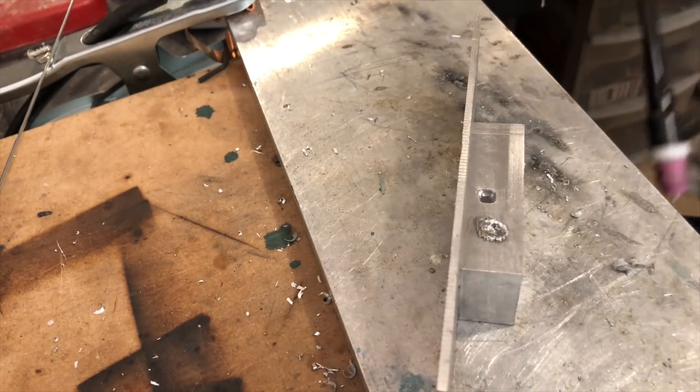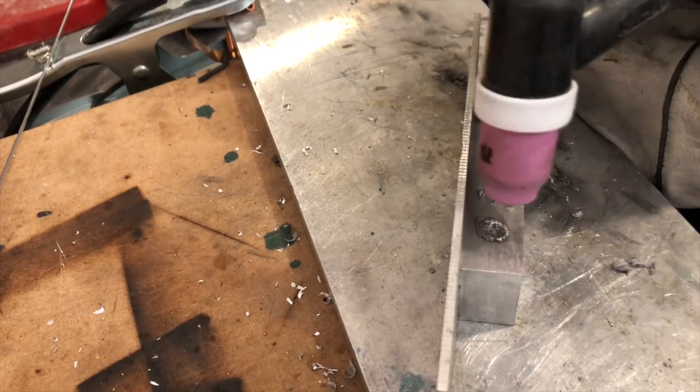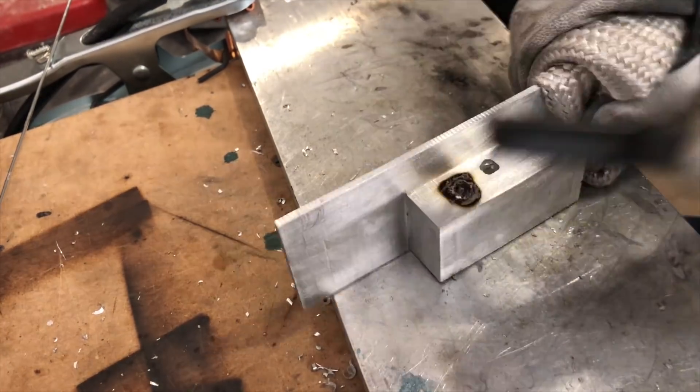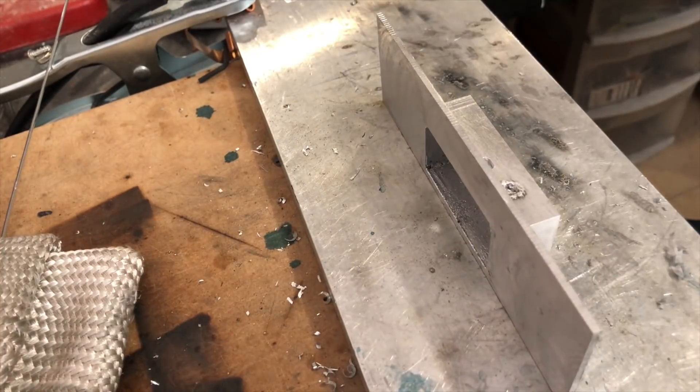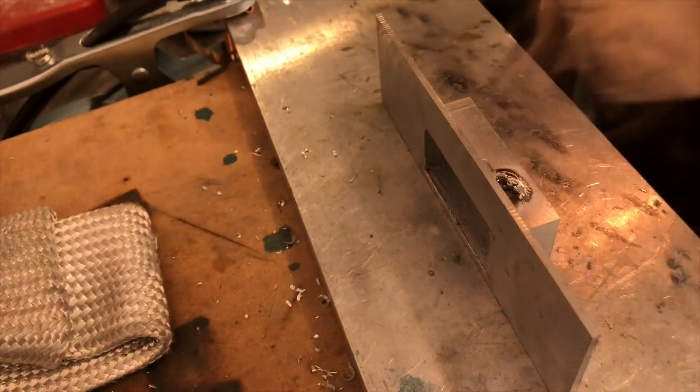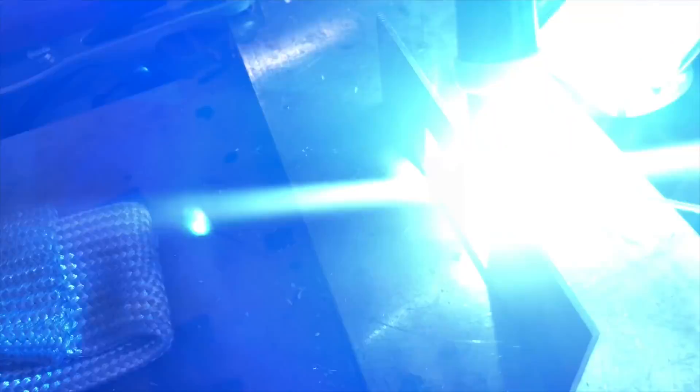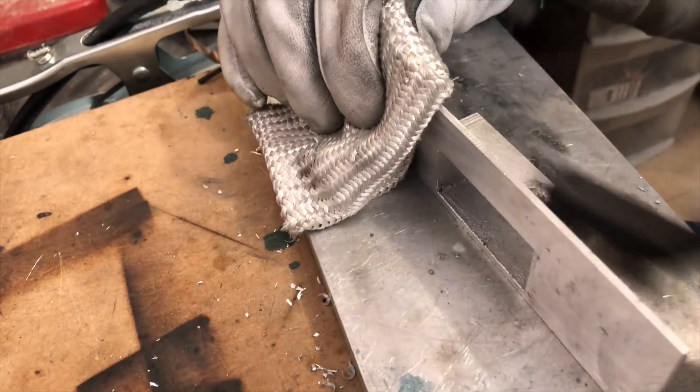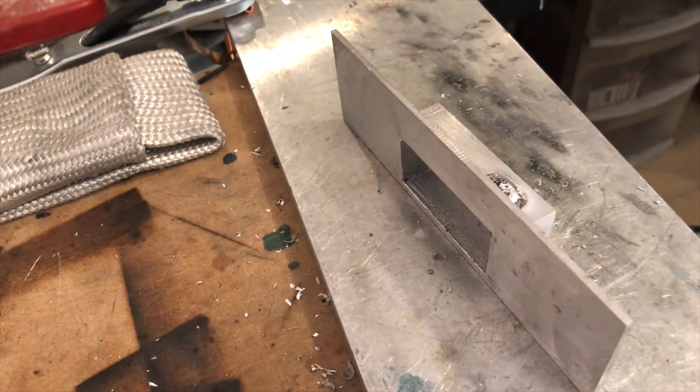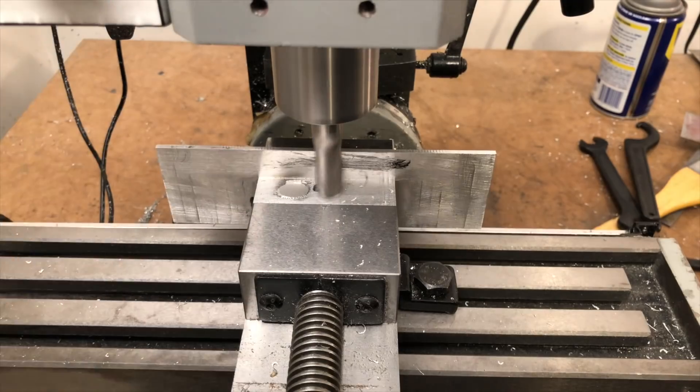Instead of machining it out, I want to see if I can burn it out. After a bit of trying, I get the first hole filled. It seems that I was able to get a lot of the contamination to float to the top. To make sure there wasn't any more contamination in the part, I take a quick facing cut. And everything looks good.